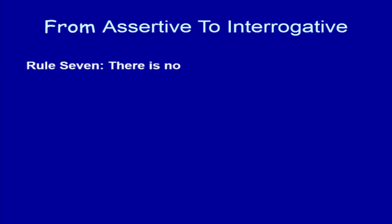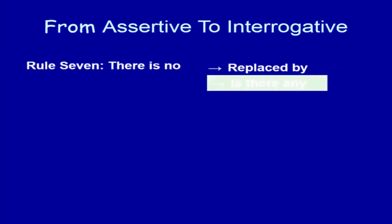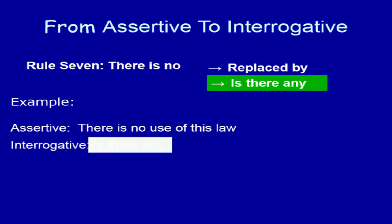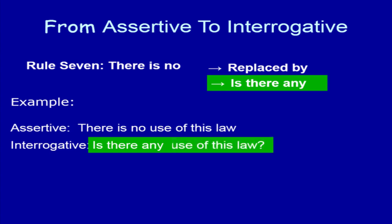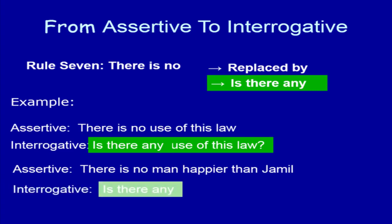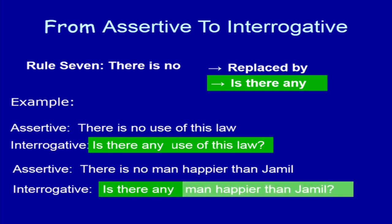Rule number 7. 'There is no' is replaced by 'Is there any?' Look at the example: 'There is no use of this law.' In an assertive sentence with 'There is no,' write 'Is there any?' in its place, then write the rest part of the sentence and use the sign of interrogation. Another example: 'There is no man heavier than Jamil.' In the interrogative sentence, use 'Is there any?' in place of 'There is no,' then write the rest part of the sentence and use the sign of interrogation.